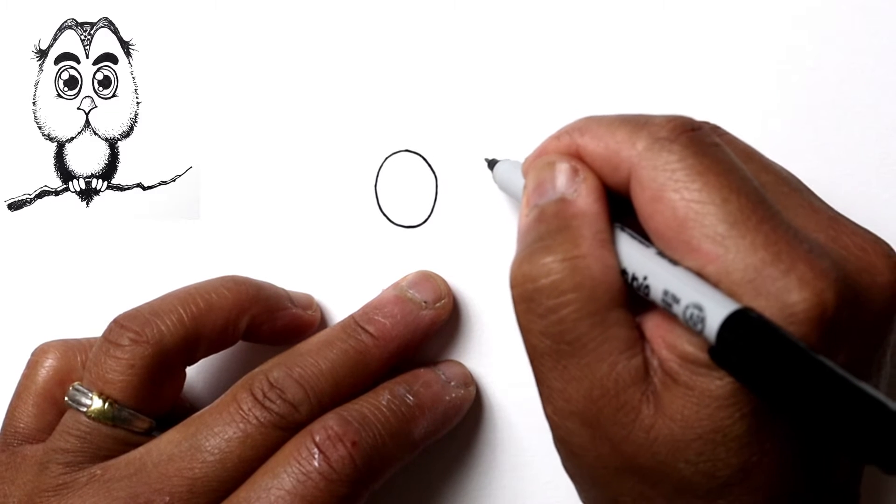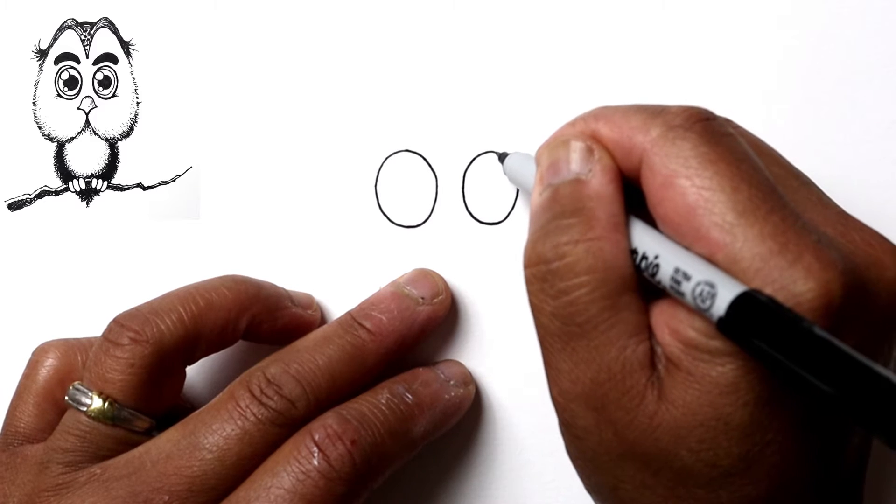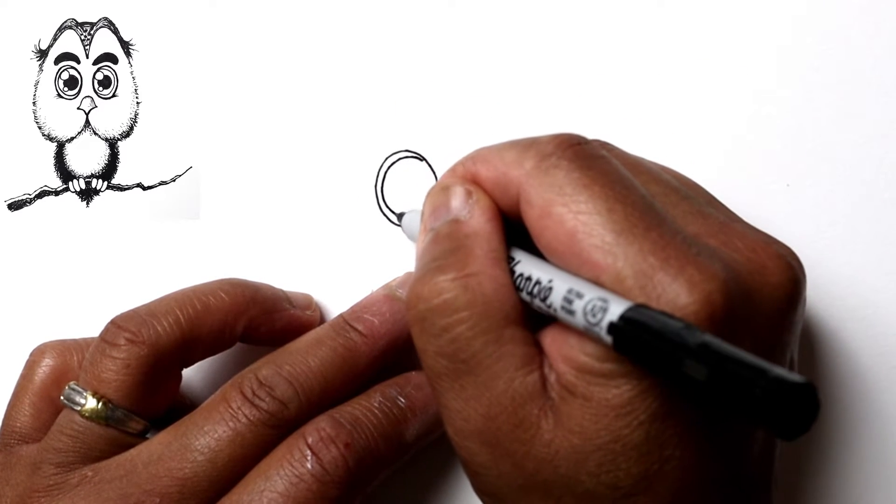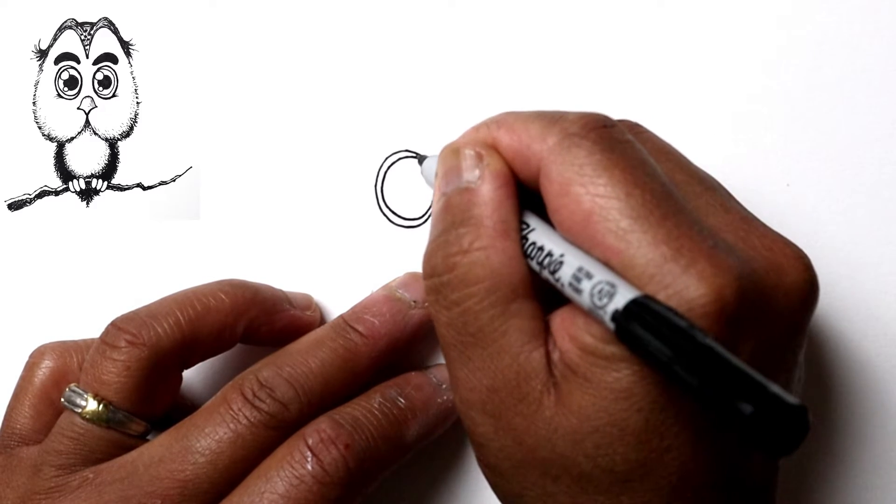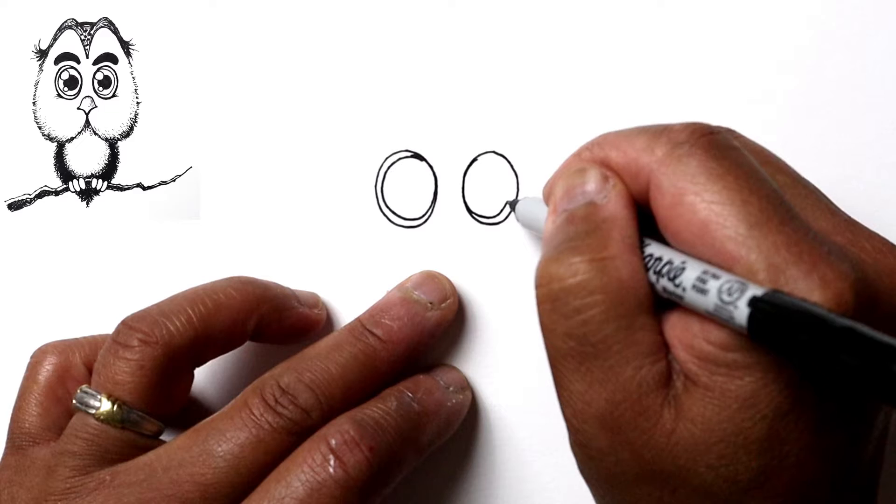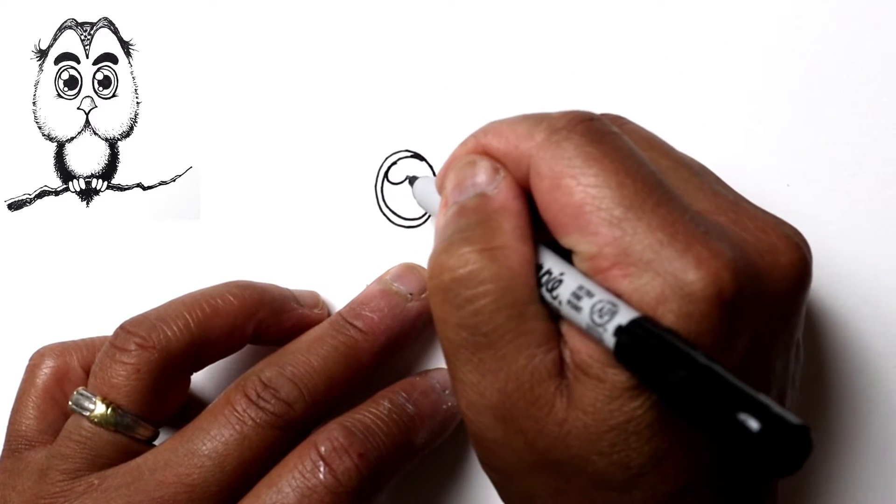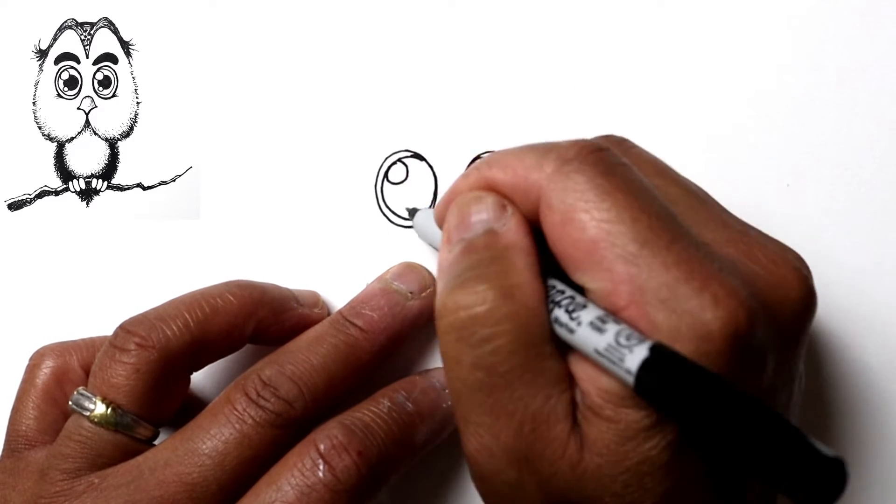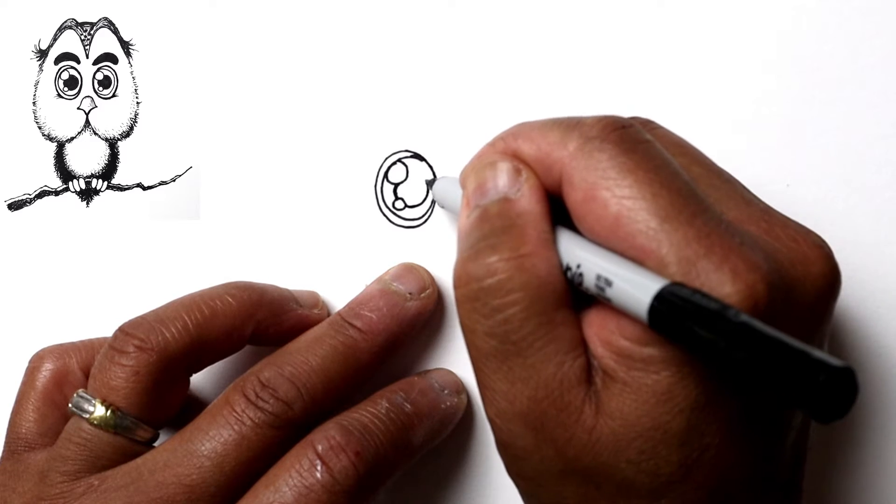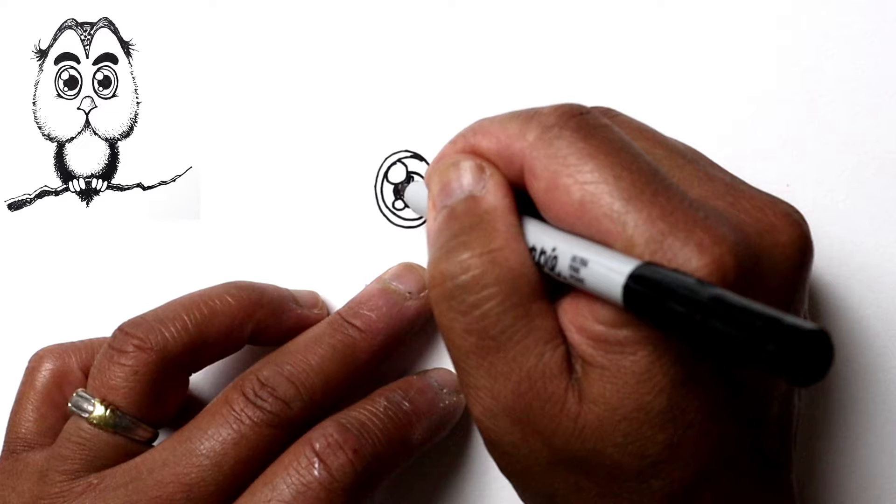Right next to each other. And let's draw these big irises inside. One way of drawing cute things is to draw the iris really large. And let's go ahead and put a couple highlights and then put a large pupil in the middle, fairly circular, and just start darkening that.